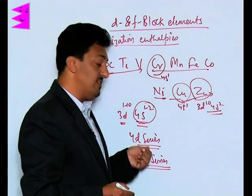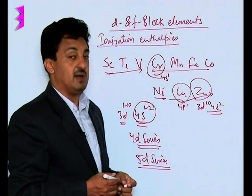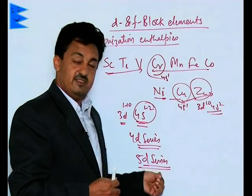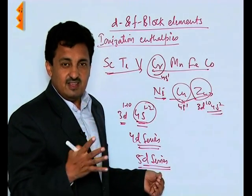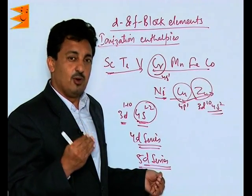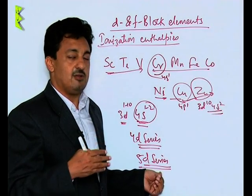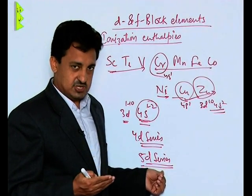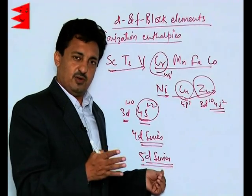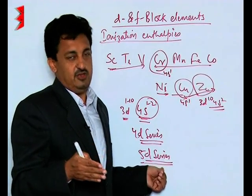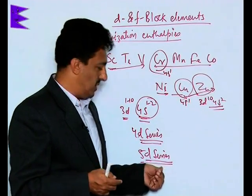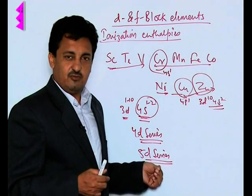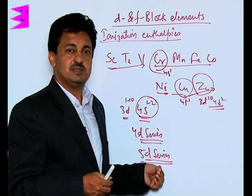Moving to the 5d series, we find that the ionization enthalpies of 5d elements are quite comparable to — and even higher than — those of the 3d series. The reason is the lanthanoid contraction: poor screening by the 4f electrons leads to poor screening of the 5d electrons as well. As a result, the 5d electrons are under the direct influence of the nucleus, making their ionization enthalpies very high.